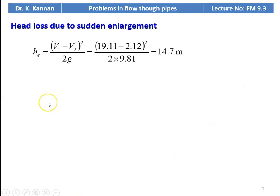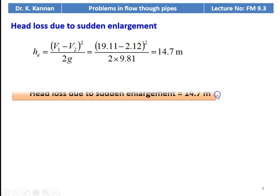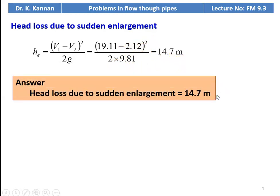The head loss due to sudden enlargement: HE = (V1 - V2)² / 2g = (19.11 - 2.12)² / (2 × 9.81) = 14.7 meters. The answer to the problem: head loss due to sudden enlargement equals 14.7 meters.